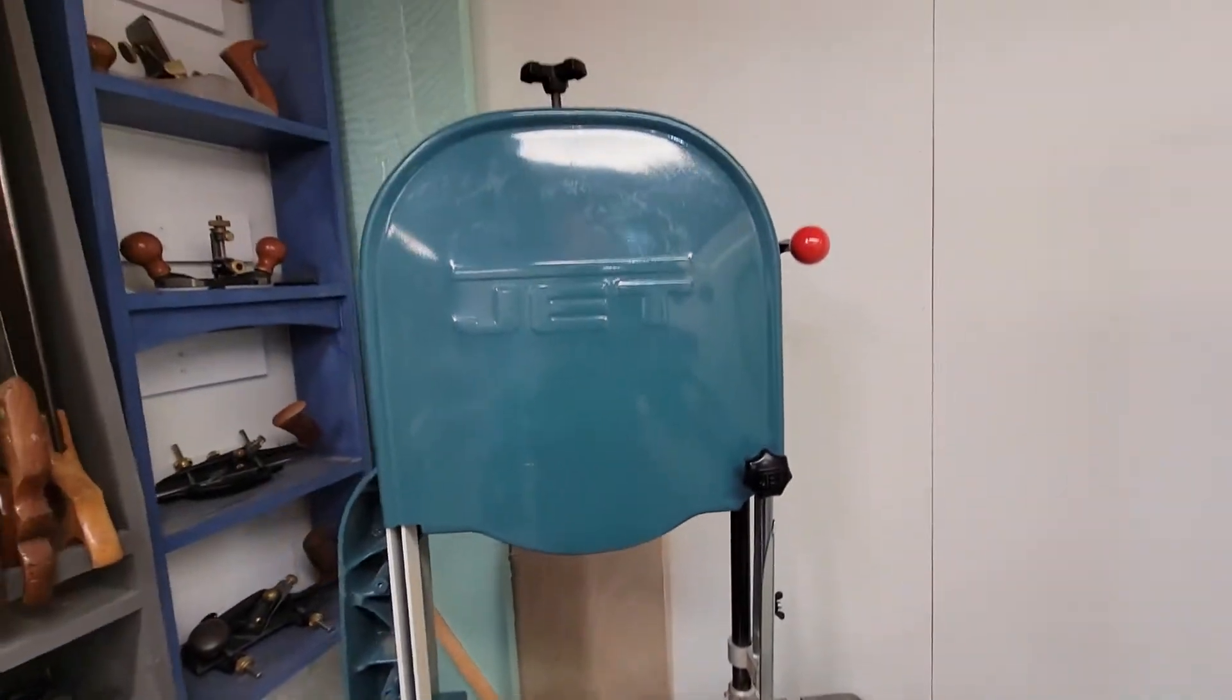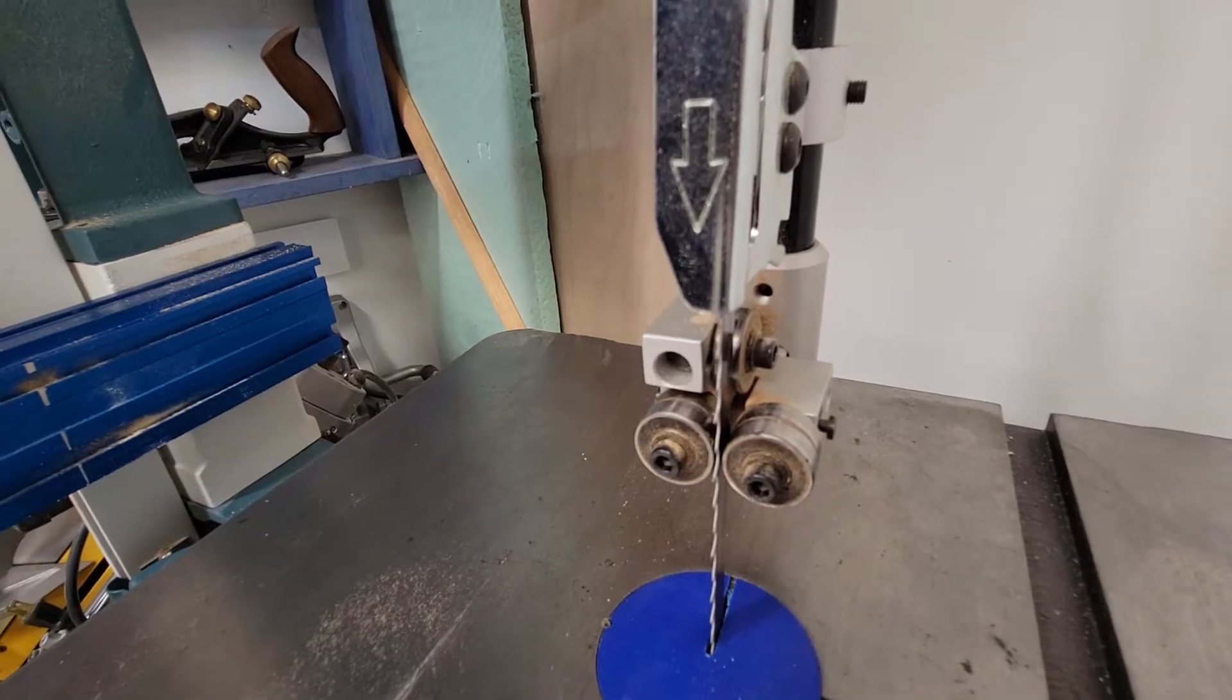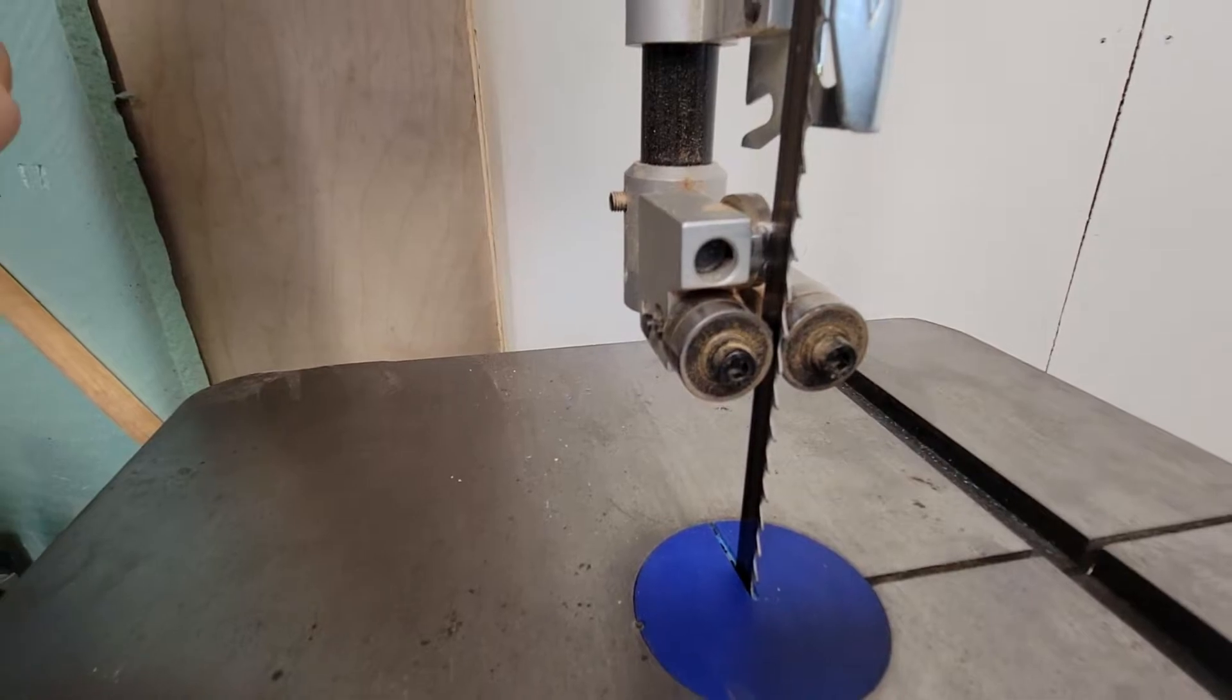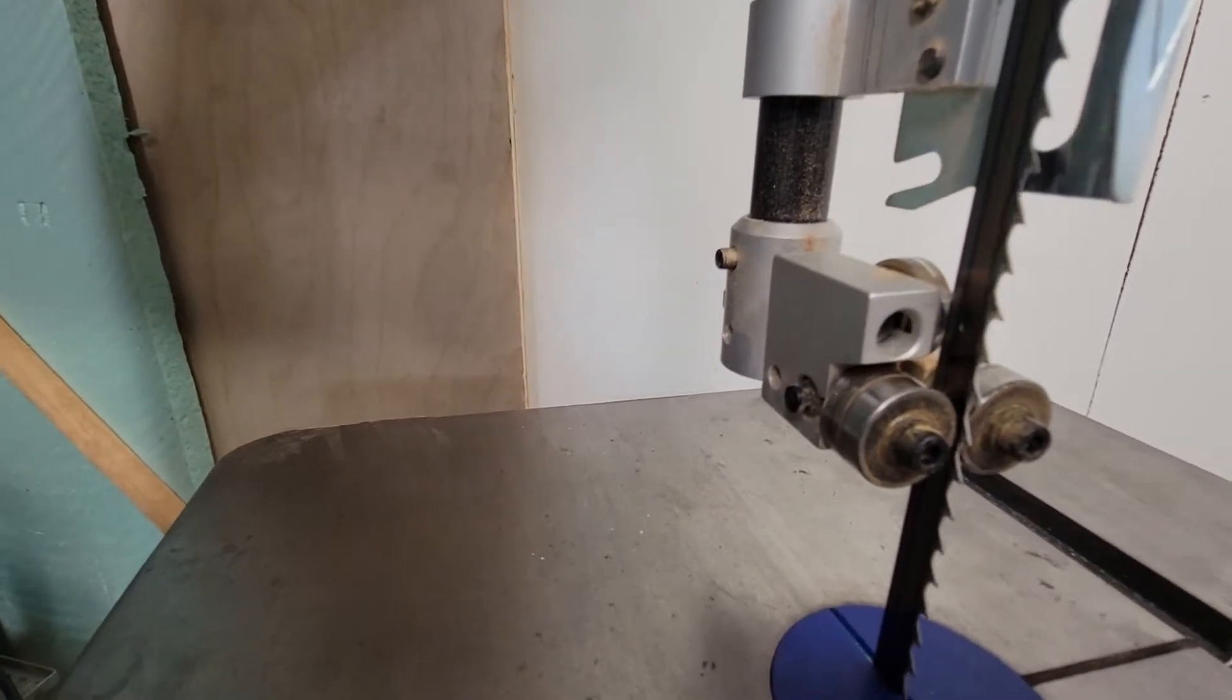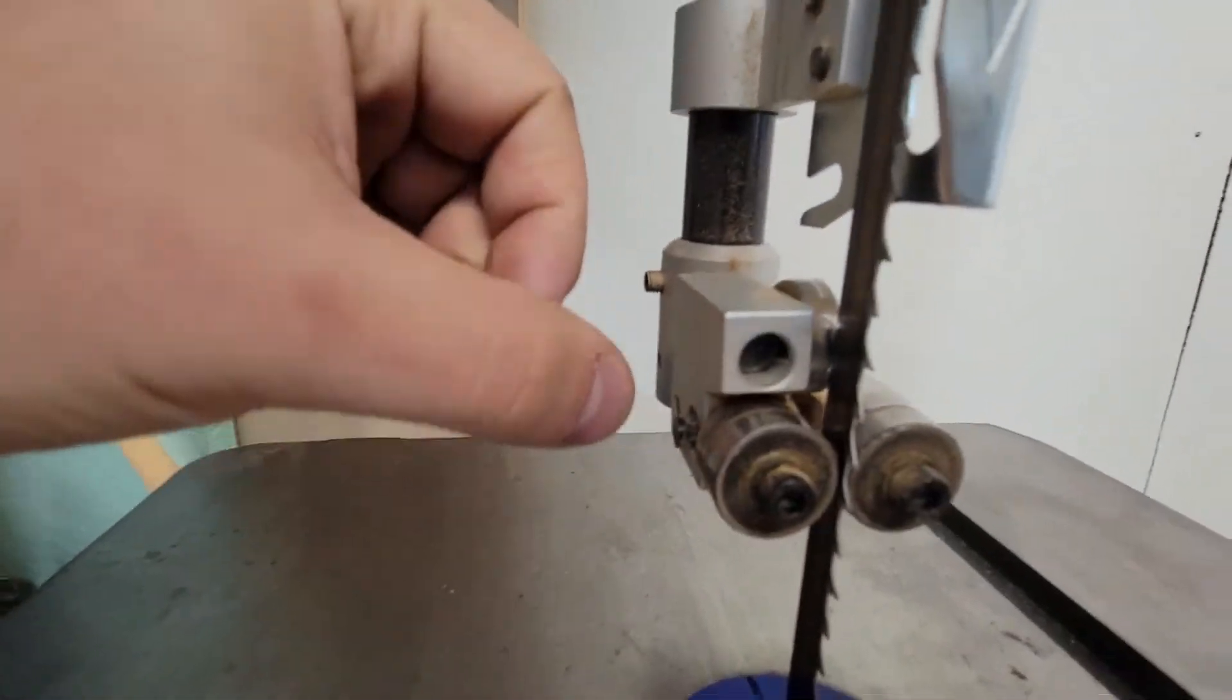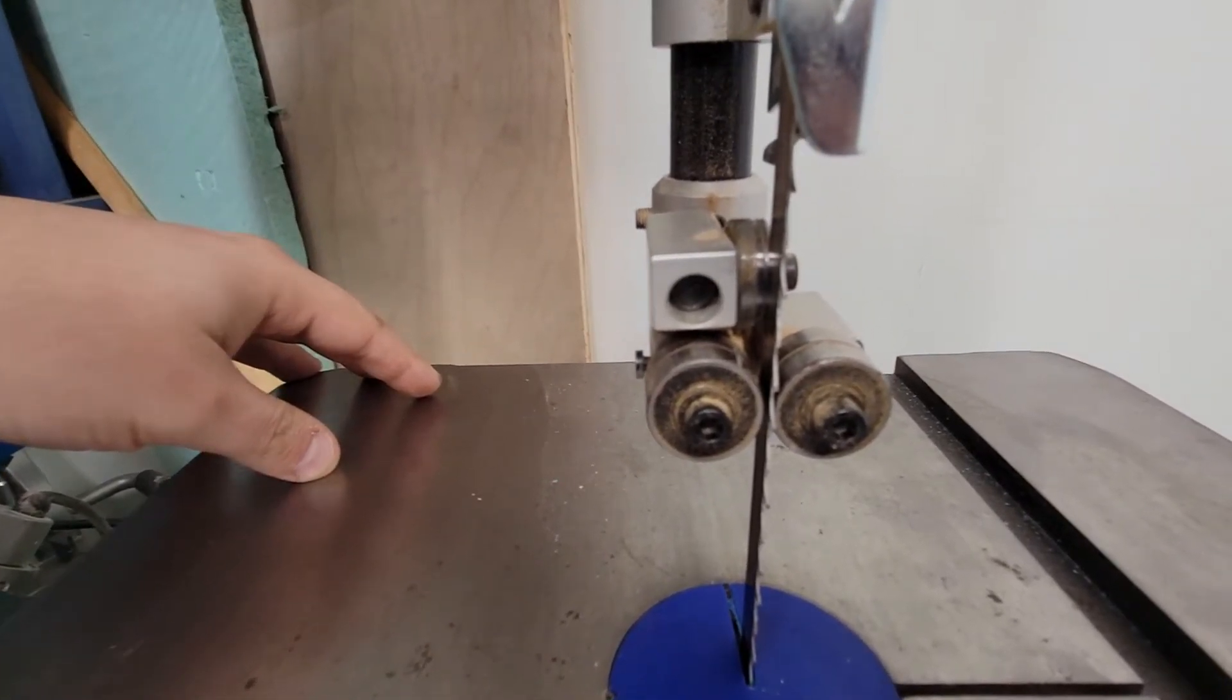I have here an old 14 inch jet bandsaw and you can see I installed some Carter bearings here for this blade on both top and in the bottom, and ultimately this is what you'll get now if you're buying a brand new jet bandsaw. Maybe not Carter brand but exactly the same roller bearings. It really gives you a nice amount of control. You've got a good thrust bearing guide and any sort of side-to-side motion is going to get arrested immediately and it really gives you a really nice consistent cut without much flutter.